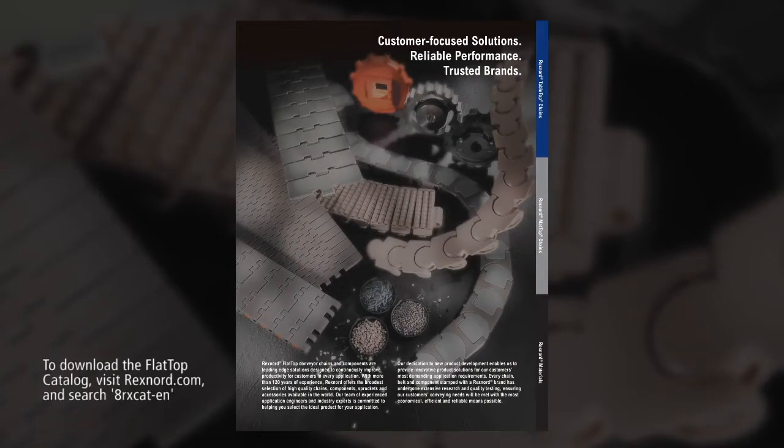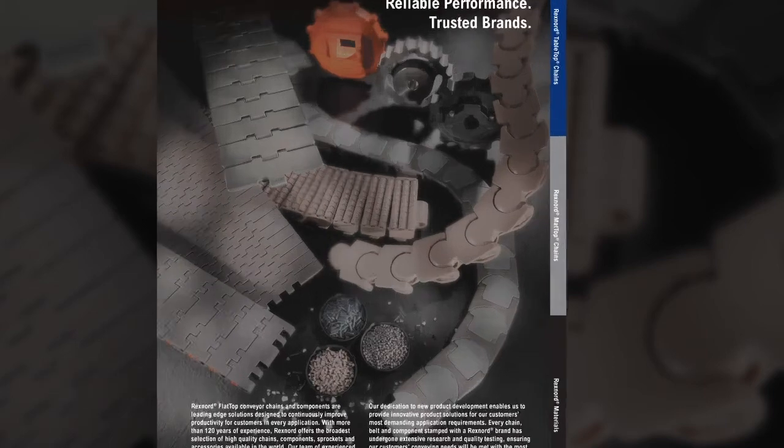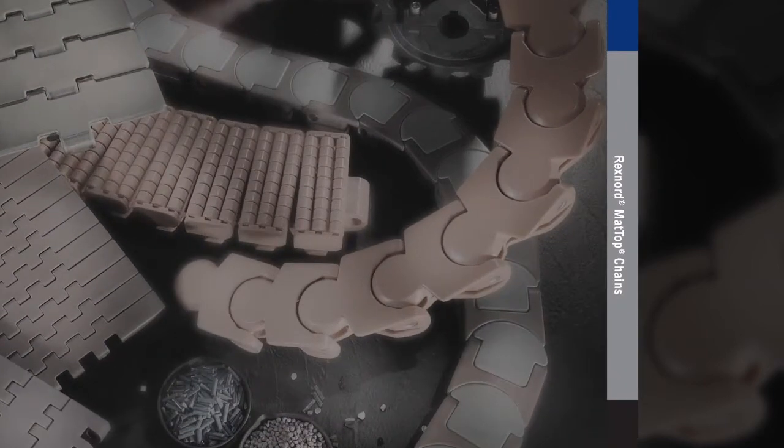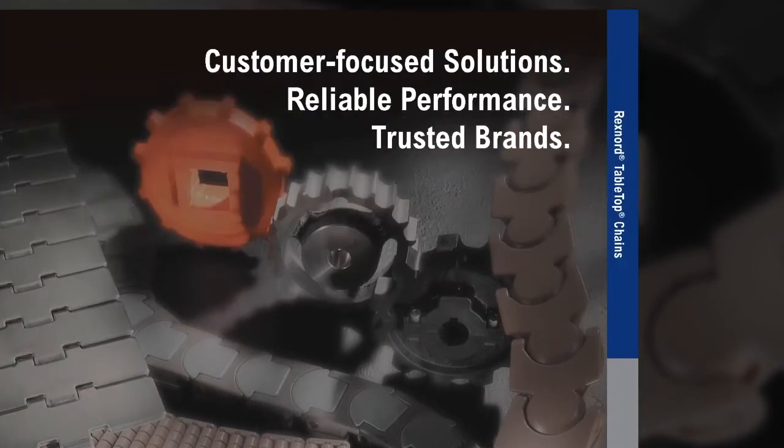The flat top catalog is a great resource to help with chain identification. The catalog is broken up into different sections, and each section is color coded for added convenience. The gray section indicates mat top chains, and the blue section refers to tabletop chains.